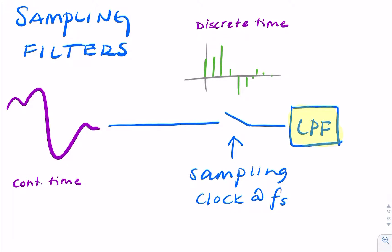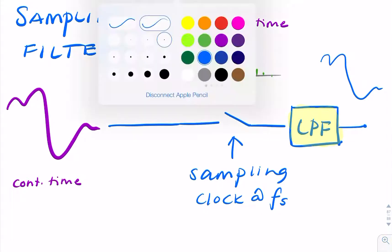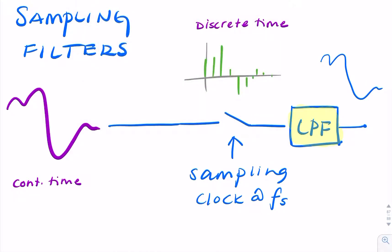then that will enable us to recover our original continuous time signal again. So this is our recovered signal, which is continuous in time, and if it's an ideal filter